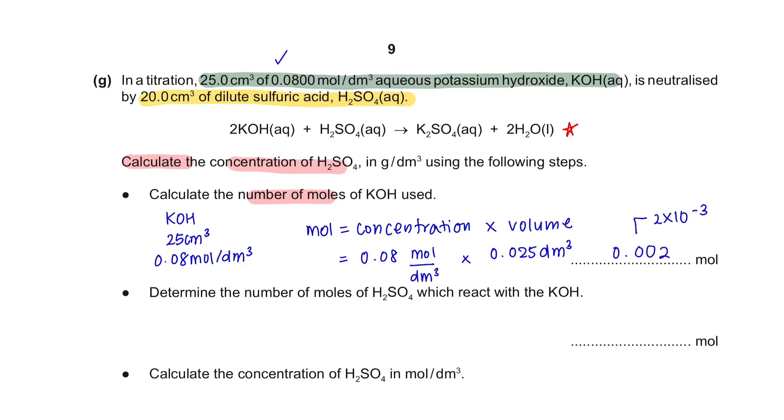Step 2: Determine the number of moles of H2SO4 which react with the KOH. We can use ratio to solve this question. Looking at your chemical equation, we can see that 2 potassium hydroxide reacting with 1 mole of sulfuric acid. From the first part of the question, we know that the number of moles of potassium hydroxide being used is 0.002. So if we use ratio to find out the mole, we will get a mole of 0.001 mole.